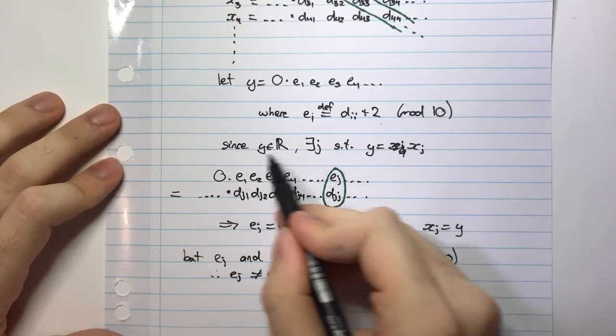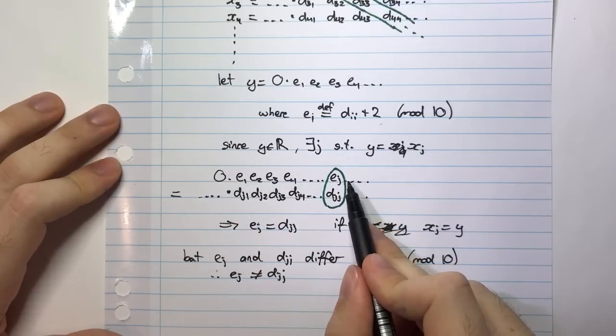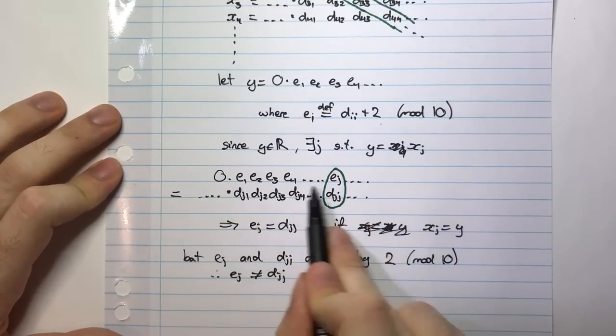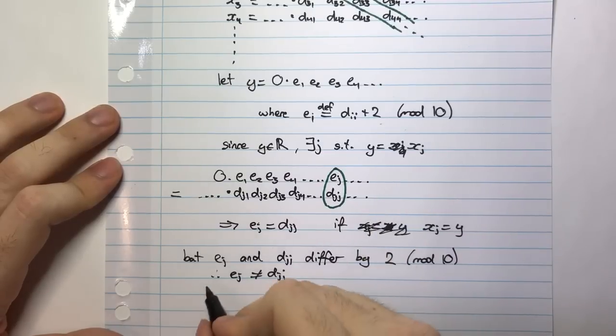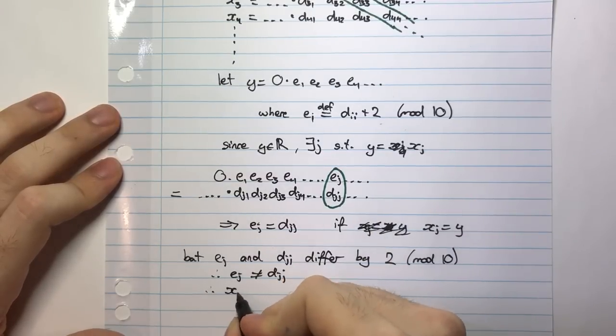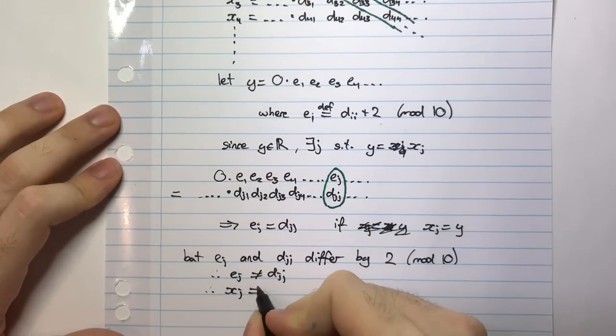And so therefore, this expression here, which is what my expression is for Y, cannot be equal to this XJ here. So I can say, therefore, XJ is not equal to Y.